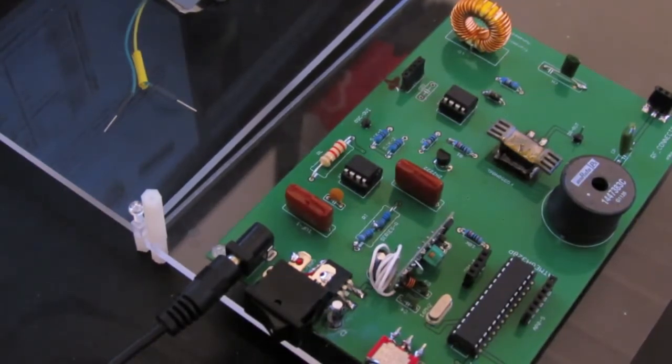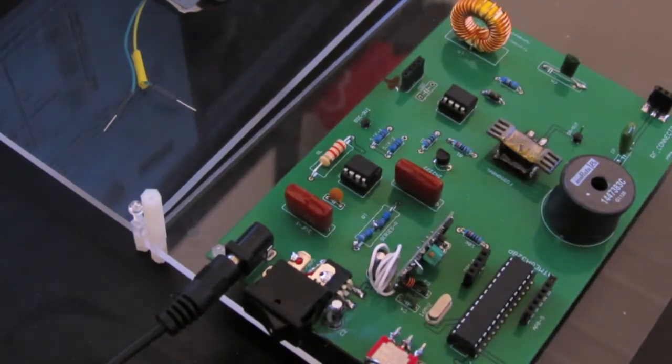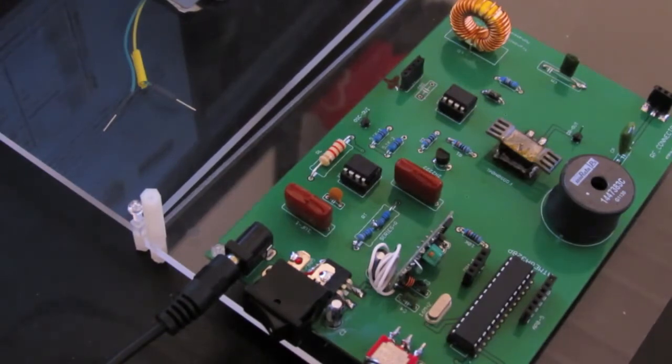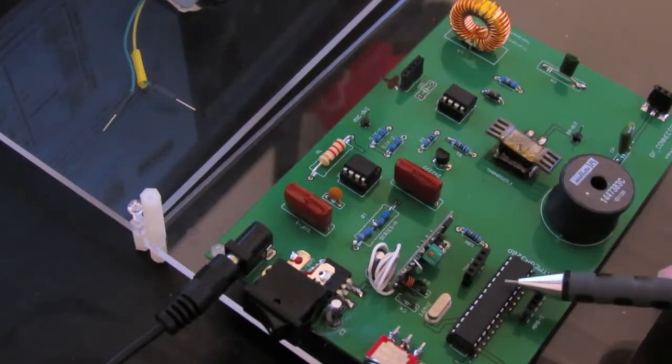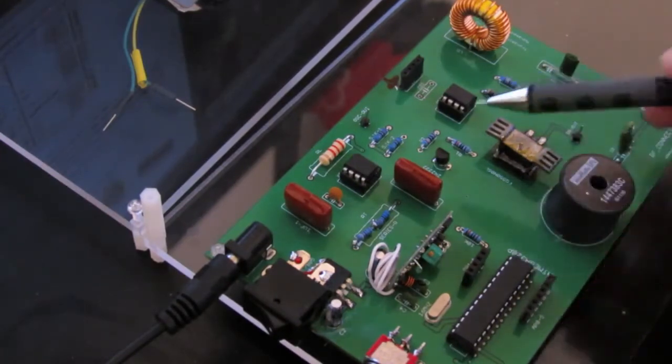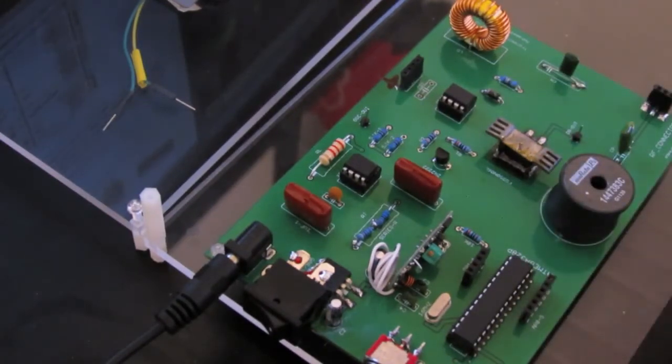If the charging current is low, that means the battery is fully charged or nearly fully charged. When the battery is fully charged, the microcontroller needs to stop the charging process using the method explained before, which is controlling the NPN transistor.